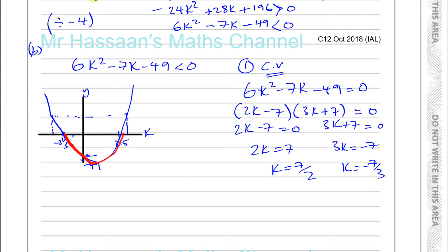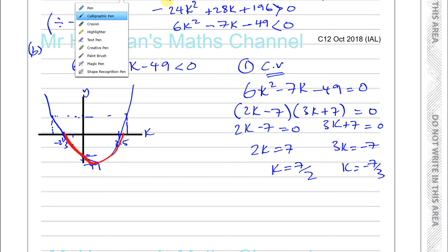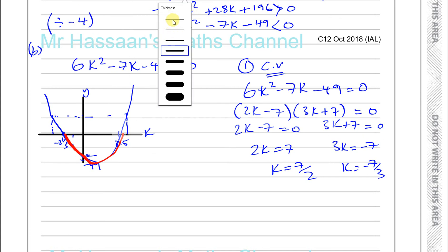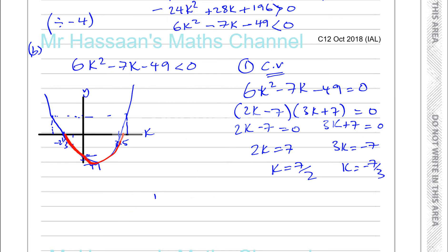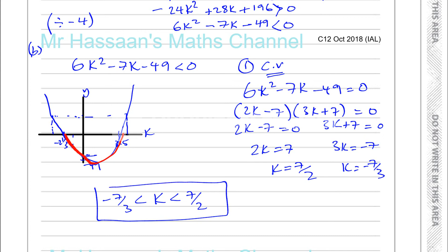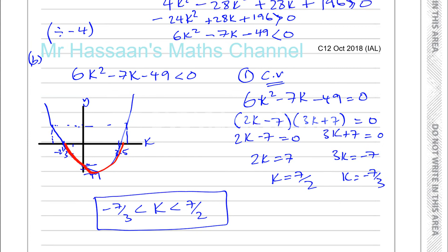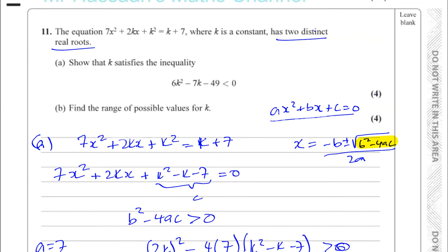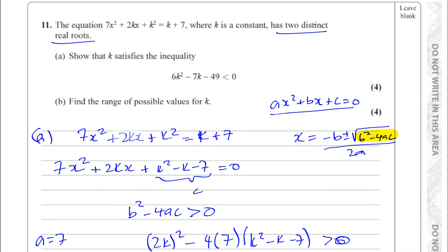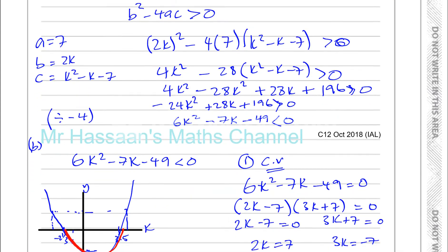The range of values for which 6k² - 7k - 49 < 0 is -7/3 < k < 7/2. That is the solution to the problem, and we're done with question 11 from C12 and question 6 from practice paper C.